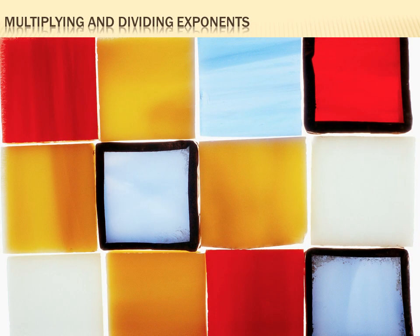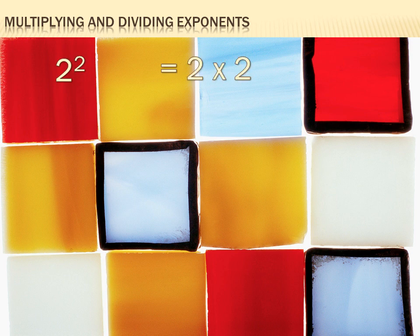Today we're going to talk about multiplying and dividing with exponents, and we'll start out easy. You know what 2 squared, or 2 to the second power, means. That means I'm going to take my 2 and multiply it by itself 2 times. It equals 2 times 2, which equals 4.